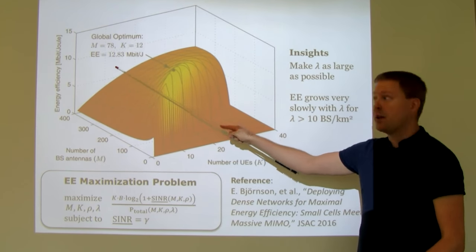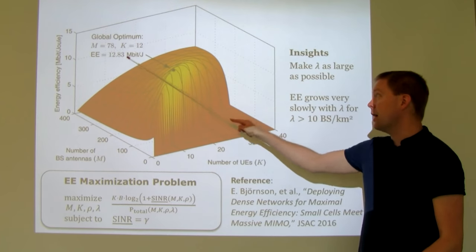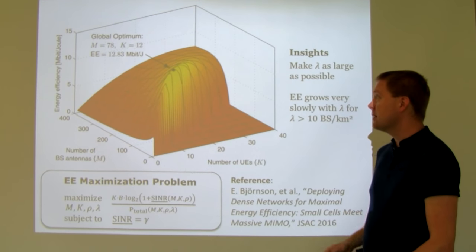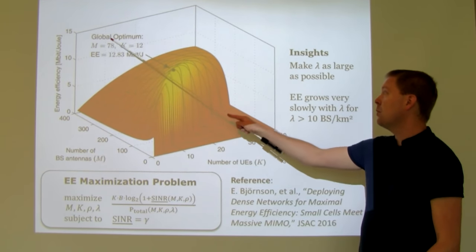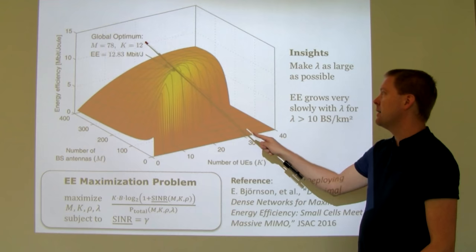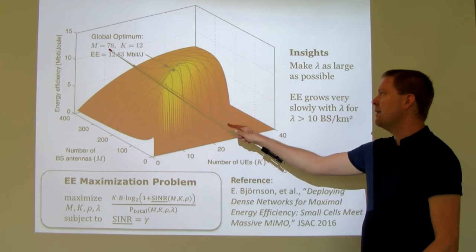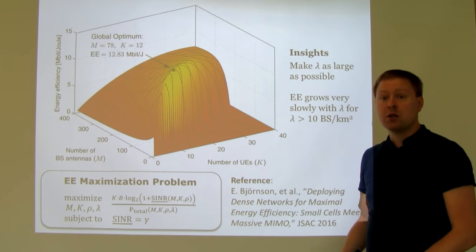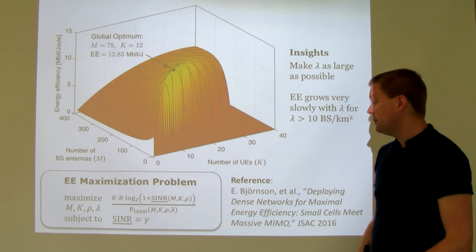The insight is that with very low base station density you should densify the network, but when you reach a certain point you don't benefit much from further densification and should instead add more antennas and users. The global optimum in this multi-cell setup — with interference from other cells — gives a smaller number: around 78 antennas and 12 users, which is still considered a massive MIMO setup.